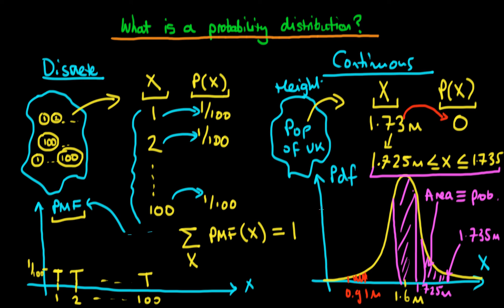Just like the discrete case requires the PMF to sum to one, the continuous PDF must have an integral across all values of x — from minus infinity to plus infinity — equal to one. An integral is the continuous analogue of a sum, and because we're dealing with probabilities, all those infinitesimal PDF values must sum to one.